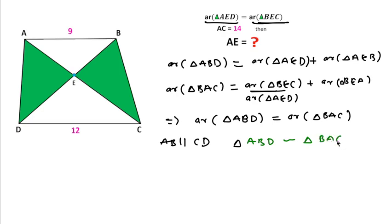Using similar triangle properties, we can write: AE over (AE plus EC) equals AB over (AB plus CD).